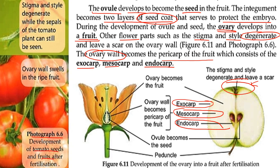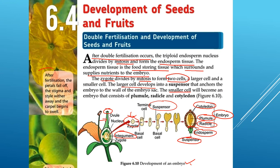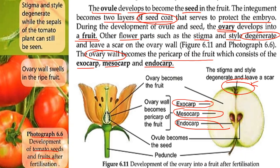After fertilization, the petals fall off, the stigma and style wither and degenerate, and the carpel begins to swell. The sepals of the tomato plant can still be seen. The ovary wall swells to form the ripe fruit.